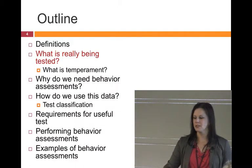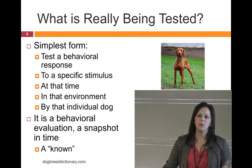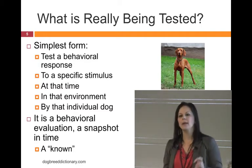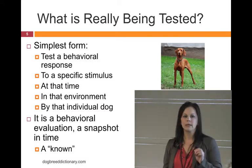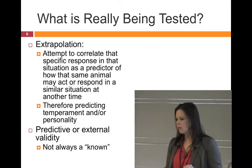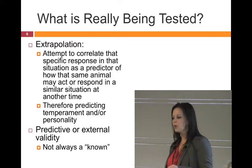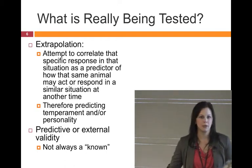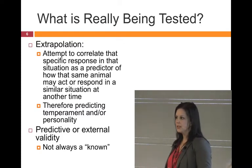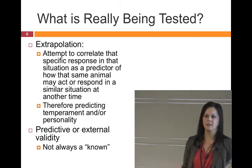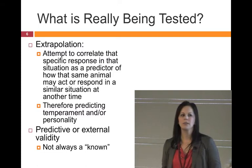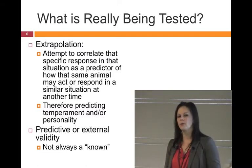So what are we testing? In the simplest form, we are testing a behavioral response to a specific stimulus at that moment in time, in that specific environment, by that individual dog. This is the known — the evaluation or snapshot in time. What happens next is that we extrapolate: we attempt to correlate that specific response we observed as a prediction of how that animal will respond in a similar situation in the future. So our goal is to predict temperament or personality — and this is oftentimes a leap of faith unless we've gone through rigorous testing.